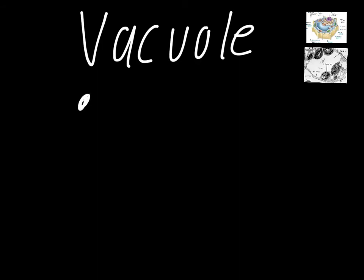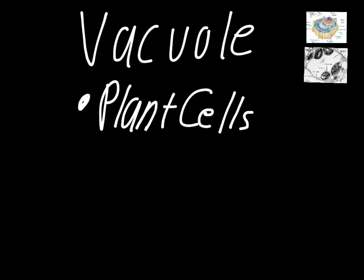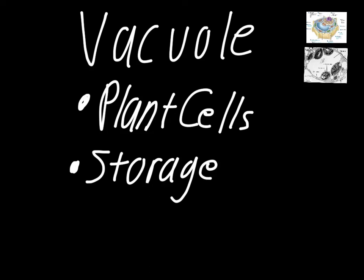To finish this one up, there are a couple of unique factors that go along with the vacuole. The first is that it's found in plant cells only — this is one we don't have in animal cells, at least not a large central one. Some animal cells do have smaller vacuoles, but the idea of a large central vacuole is something that just happens with plant cells. Its function is storage — mostly for water, but also sugars, ions, and some salts. That's the vacuole: pretty straightforward, kind of an easy organelle.